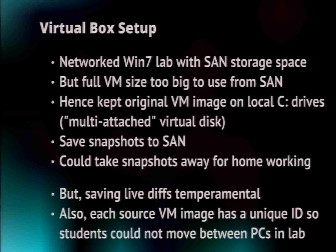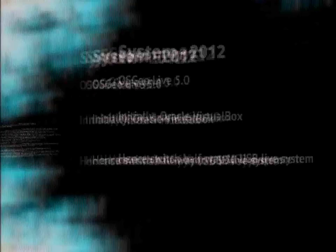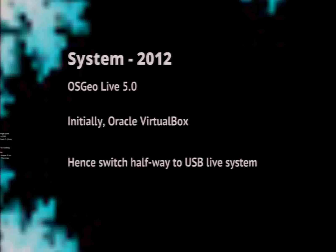However, once you've got a class of about 20 students relying on the network link to the SAN, however good it is, this started to get temperamental — they're saving diffs and there was disk access contention. A problem that became more obvious from class to class was that although you're using the exact same file on each PC, if you're not careful when setting up the VM it gets a UUID — a unique ID — which means you're locked to working on that specific machine.